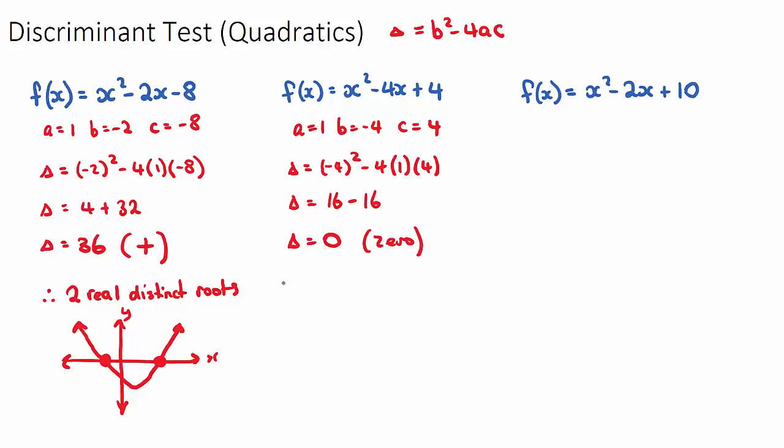this tells us that we have one real root. And in the IB, they sometimes try and trick you here by saying two equal roots. Two equal roots is actually the same as one root. It means we do have two roots, but they are the same. So it's actually just one root. And what these types of equations look like, where we have one real root or two equal roots,